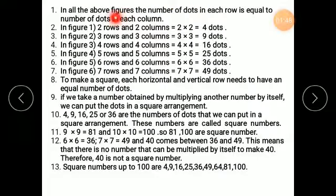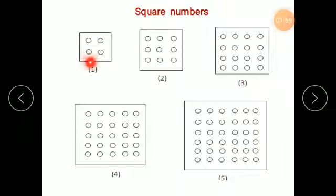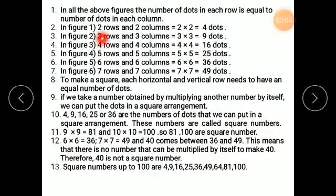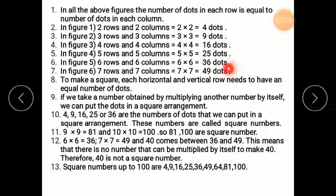In figure 1, 2 rows and 2 columns equals 4 dots — 2 twos are 4. Next: 3 rows, 3 columns, so 3 threes are 9. Then 4 fours are 16. 5 fives are 25. 6 sixes are 36 dots. And if I continue with the same pattern — which I haven't drawn — 7 rows and 7 columns, then 7 sevens are 49 dots.